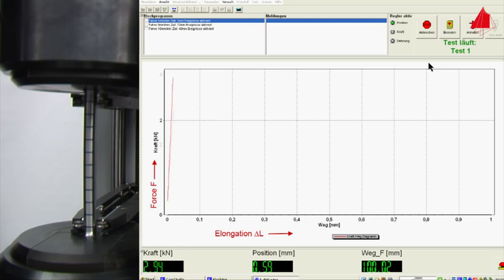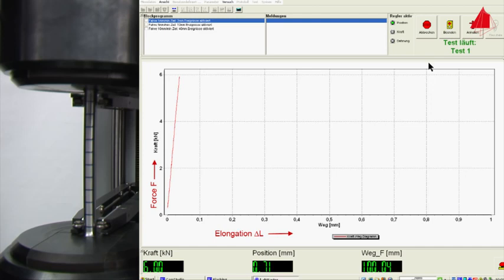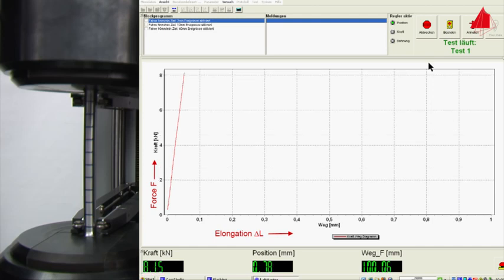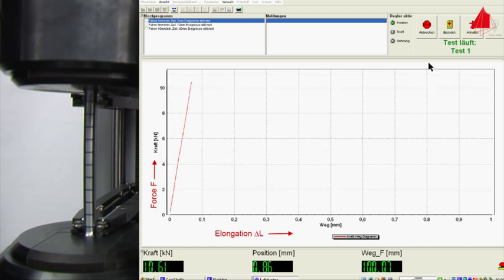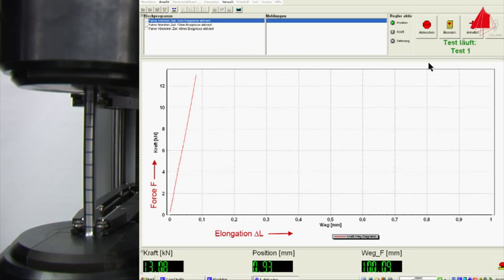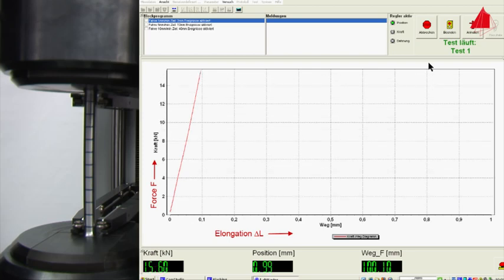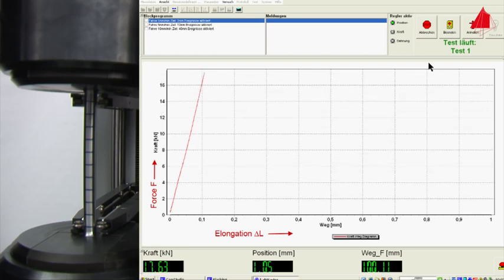Force and elongation are proportional and form a steep straight line in the diagram. In this area, the material behaves elastically. If the test piece were to be unloaded from this area, it would spring back completely to its original length.